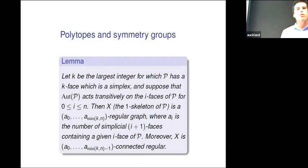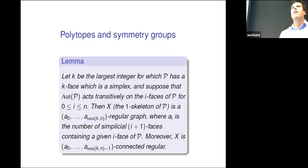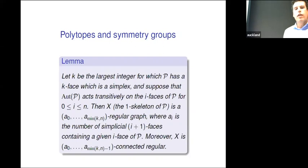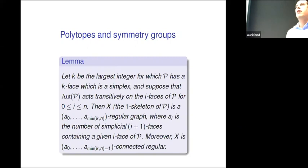If you have a K-face which is a simplex, and you also assume that the automorphism group acts transitively on the i-faces up to n, then if you consider the minimum of K and n, you have at least one K-face which is a simplex, and transitivity means all of them must be simplices. Simplices are good for having this constant number by definition. So if you could get polytopes like this, you could get a reasonably good connected regular graph, and connectivity you also get for free. That's a first example where you would be able to achieve higher regularity.